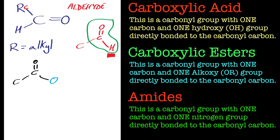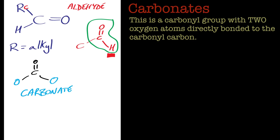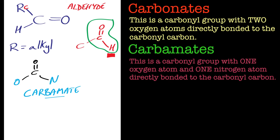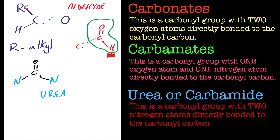If we replace both elements on either side of that carbonyl to give two oxygens, we get the common carbonates. And if we replace one of those oxygens with a nitrogen we get carbamates. Replacing both elements on either side of that carbonyl with two nitrogens gives us the functional group urea, or carbamide.